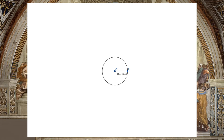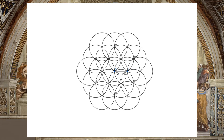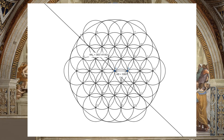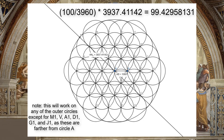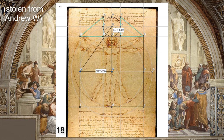If one begins the Flower of Life pattern with a circle of radius 1,080 and creates additional complete rolls of circles, a circle with a radius of approximately 3,937.4 can be drawn by connecting the center of the pattern to the farthest point along the circumference of one of the outer circles. This is 99.43 percent of 3,960.